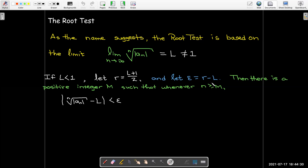Well, remember epsilon we said is r minus l. So I could rewrite that inequality as a three-part inequality. And when l is less than one, I'm interested in really the middle and right side here. I can add l to each side of that inequality and find out that the nth root of the absolute value of a sub n is less than r.